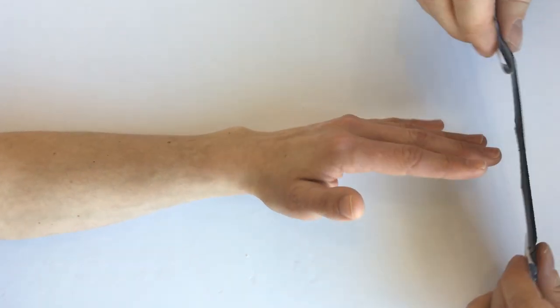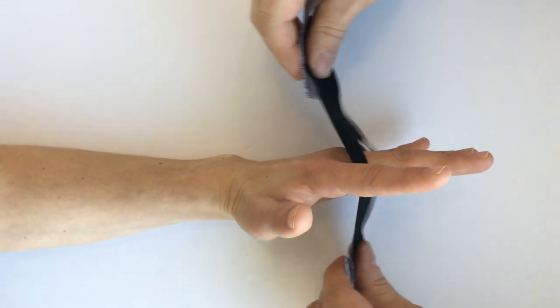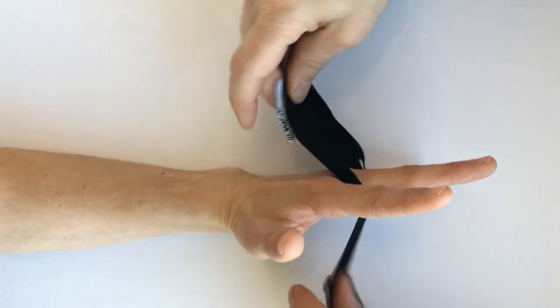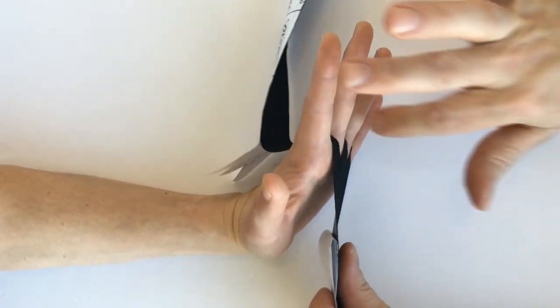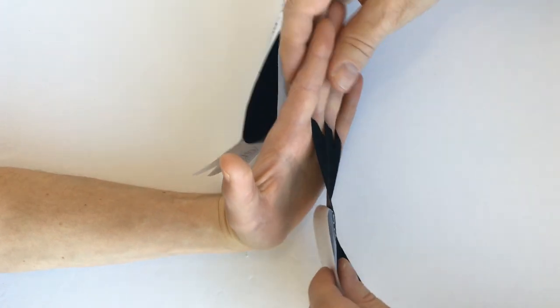You get those little holes right over there, and that gives you a nice piece of kinesio tape in between each of the fingers and the web spaces.